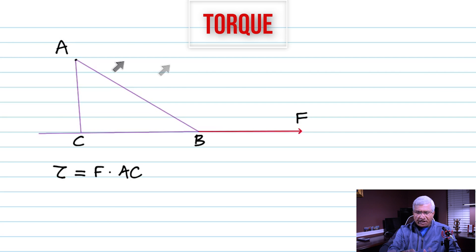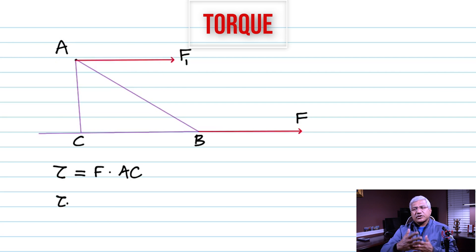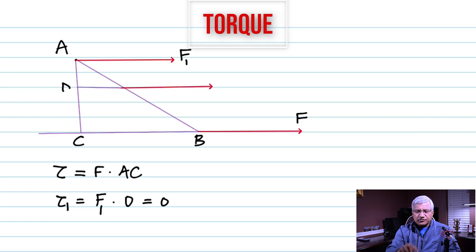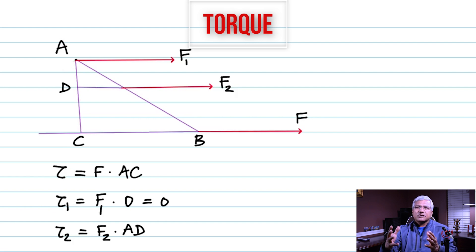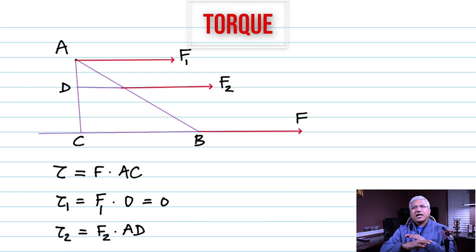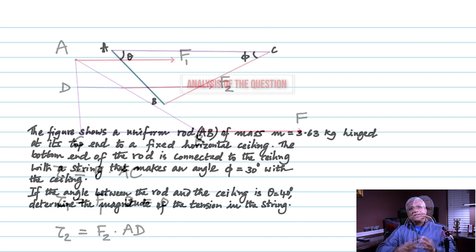If the force was applied exactly at point A, there is no distance, so the torque due to that force would be zero. If the force was applied somewhere else, the distance you multiply would be AD, because you always take the perpendicular distance between the line of action of the force and the point where you're calculating the torque. There are forces at the hinges, but we need not consider them — because when the force acts exactly at the pivot, the perpendicular distance is zero and therefore there is no torque.